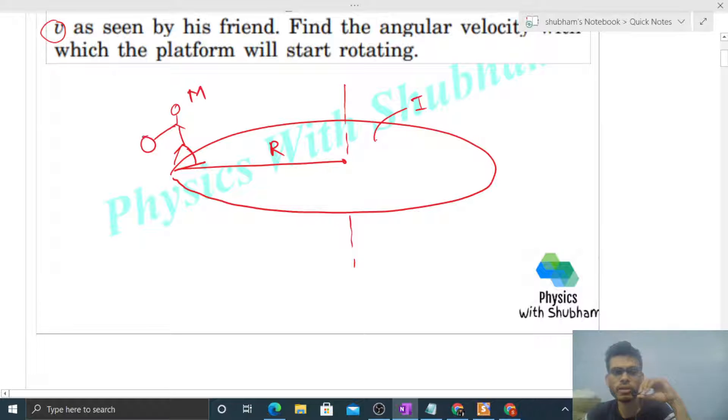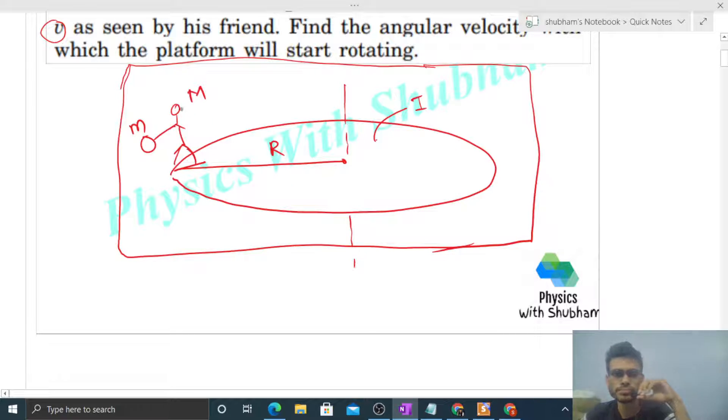The mass of the kid is capital M and the kid can throw a ball of mass small m. Initially everything is brought to rest, means initially everything is stationary. Let me define my system: this ball, this kid, and this platform is my system.